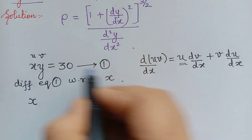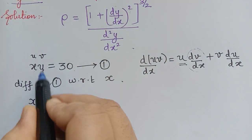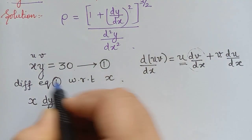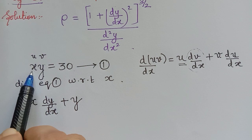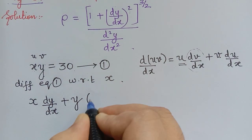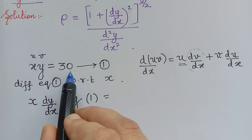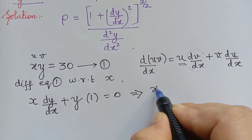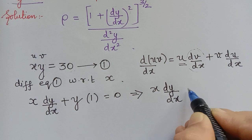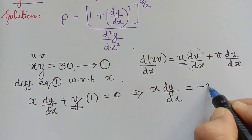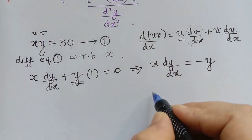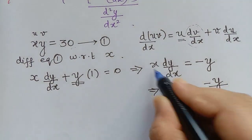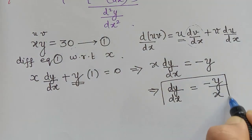Applying the product rule: x · (dy/dx) + y · 1 = 0, since 30 is a constant and its derivative is zero. Rearranging, x · (dy/dx) = −y, therefore dy/dx = −y/x.